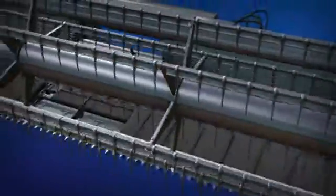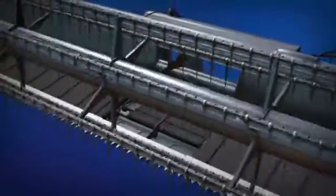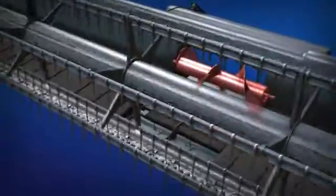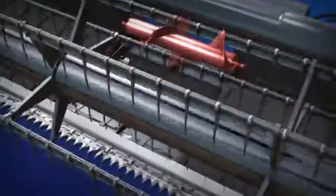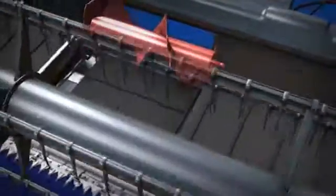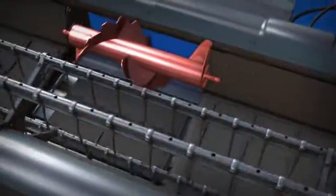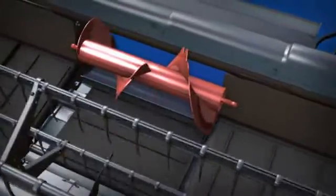The center feed auger is critical in feeding the crop smoothly and evenly from the center draper to the combine feeder house. The forward auger position over the draper provides positive feeding in fluffy and high-yielding crops.